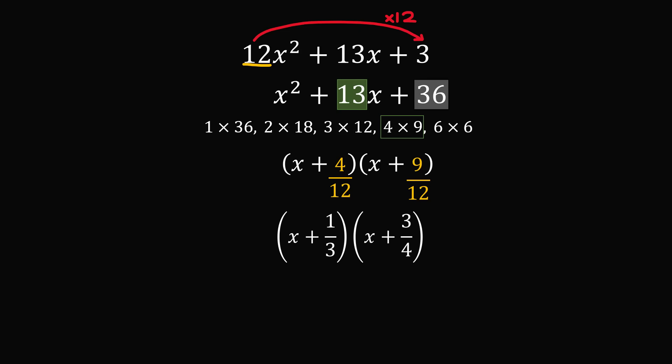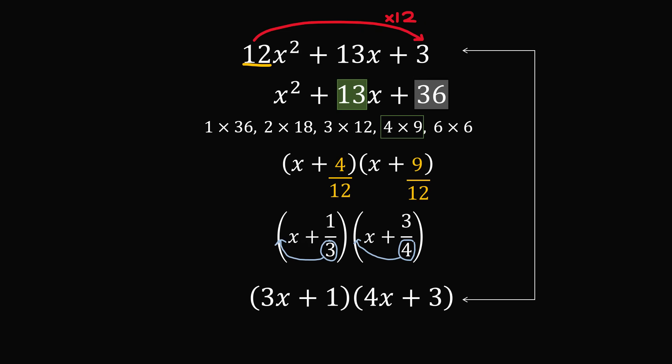So we have x plus 1 over 3 times x plus 3 over 4. For the final step, we take each denominator and slide it back to the coefficient on x. We slide the 3 to the front of the first factor and the 4 to the front of the second factor. We now have 3x plus 1 times 4x plus 3, and this is exactly how you factor the original trinomial.